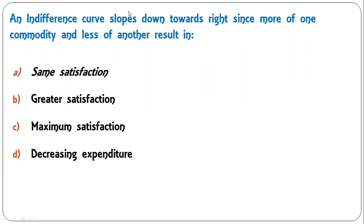Next: 'An indifference curve slopes downward towards right since more of one commodity and less of another result in' — same satisfaction, greater satisfaction, maximum satisfaction, or decreasing expenditure? A is the correct answer: with a downward-sloping indifference curve, you consume more of one and less of another commodity, giving the same level of satisfaction.